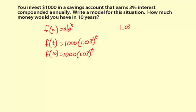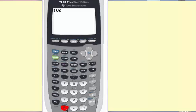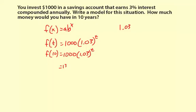Now let's get the calculator. 1,000 times 1.03 to the 10th power. 1,343.916, we'll round to 1,343.92. So our output for an input of 10 years is $1,343.92.